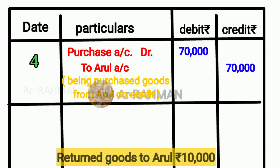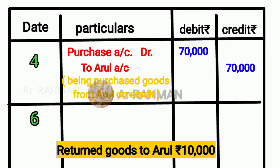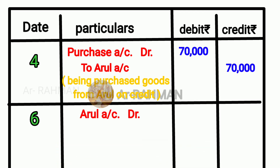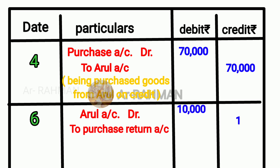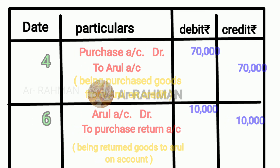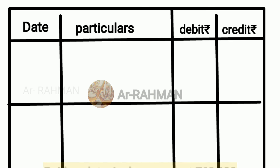Next question: return goods to Arul. Next question: paid cash to Arul on account. So Arul — to cash pay. Debit all expenses and losses, credit all income and gain. Arul account Dr, and to cash account.